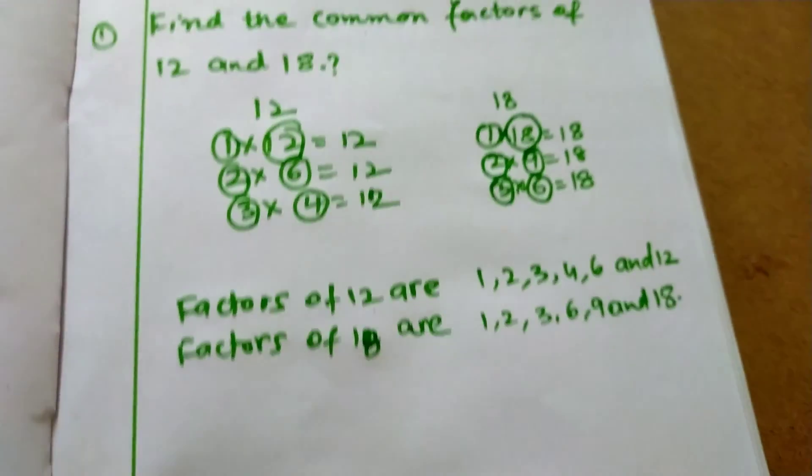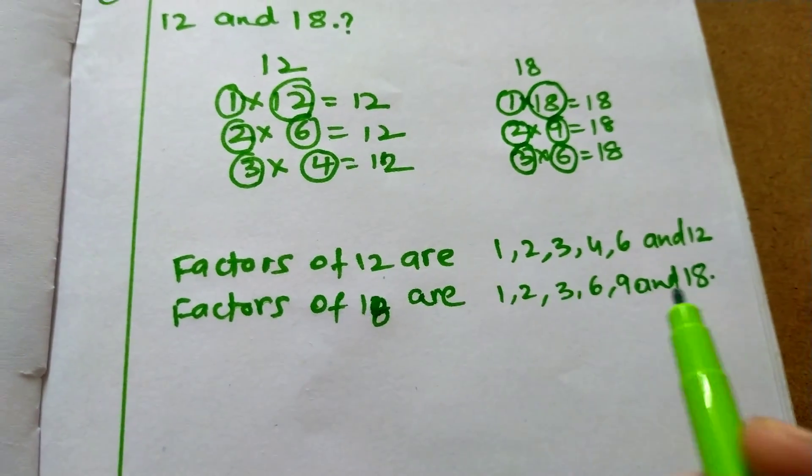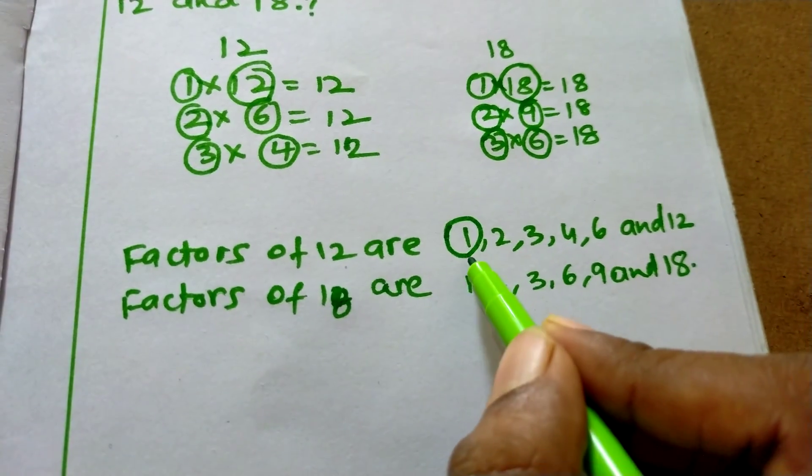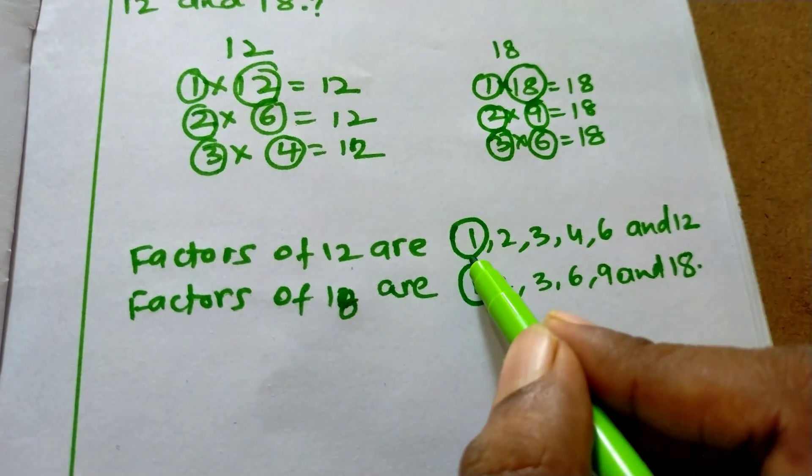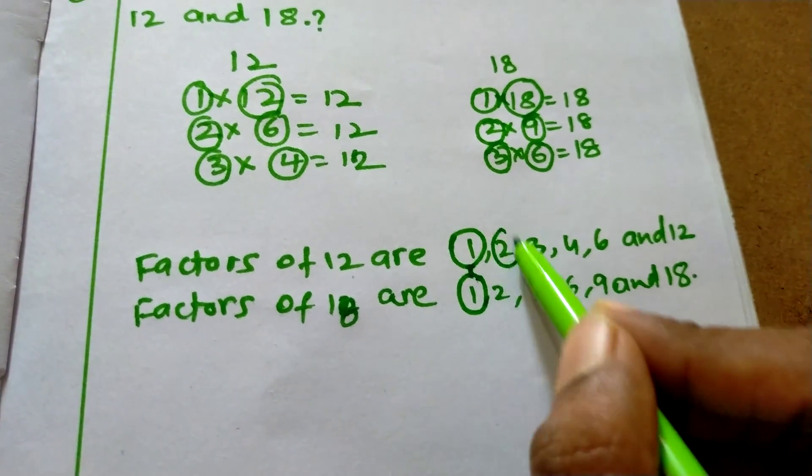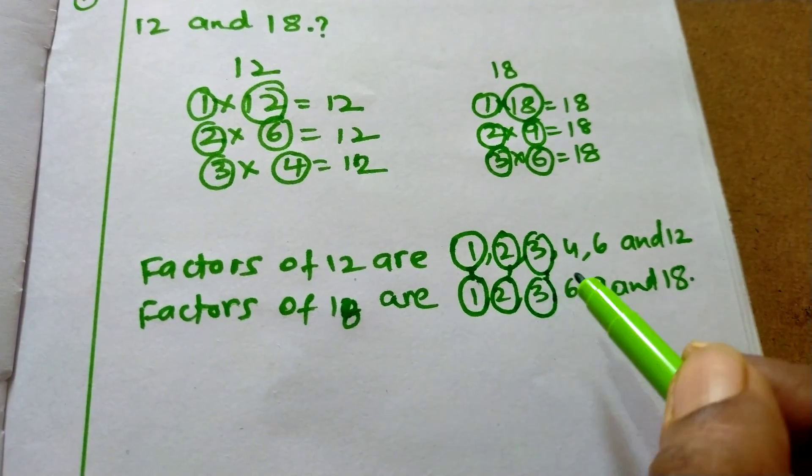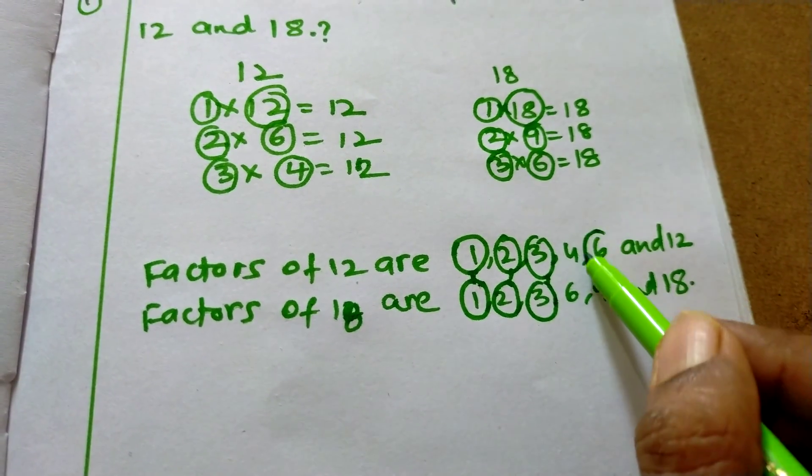So, what are the common factors? Here we can see that 1 is common in both lists, and 2, 3, and 6.